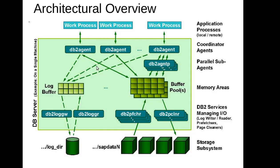Now the architectural overview — how your application interacts with the database engine and how it works. This particular slide is mostly the process overview, not the exact architectural overview. You have a work process representing the application layer, and you have the database server. And then you have the physical disks — the green boxes basically denote physical disks.